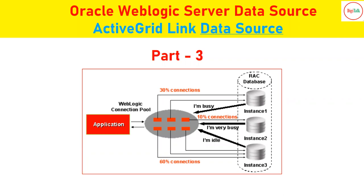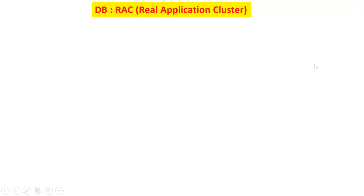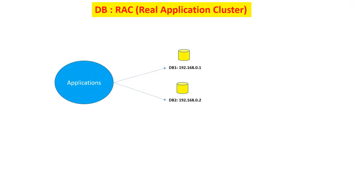In this video we will learn about the concepts of Active Grid Link data source along with its features. This Active Grid Link data source is specifically designed for the RAC cluster. The concept of RAC is similar to how we have clusters in WebLogic Server, where we configure multiple managed servers inside a cluster for high availability.